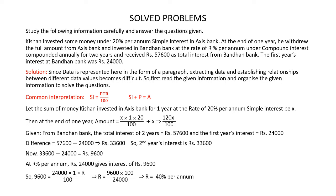We know that simple interest is equal to principal multiplied by time multiplied by rate of interest divided by 100. Also, simple interest plus principal is equal to amount. Now let the sum of money Kishan invested in Axis Bank for one year at the rate of 20% per annum simple interest be x. Then at the end of one year, amount is equal to simple interest plus principal, so amount is equal to x multiplied by 1 multiplied by 20 divided by 100 plus x.